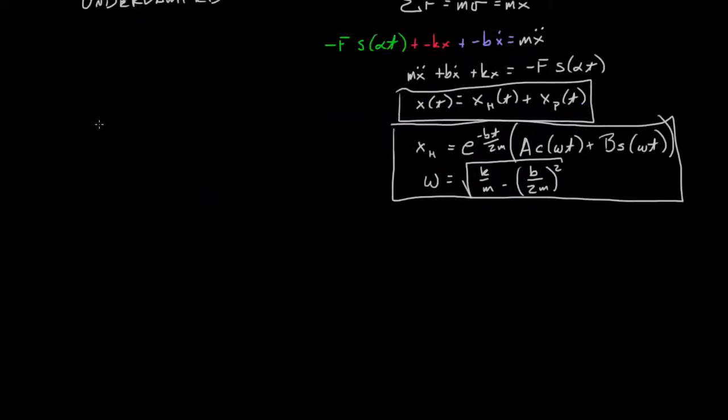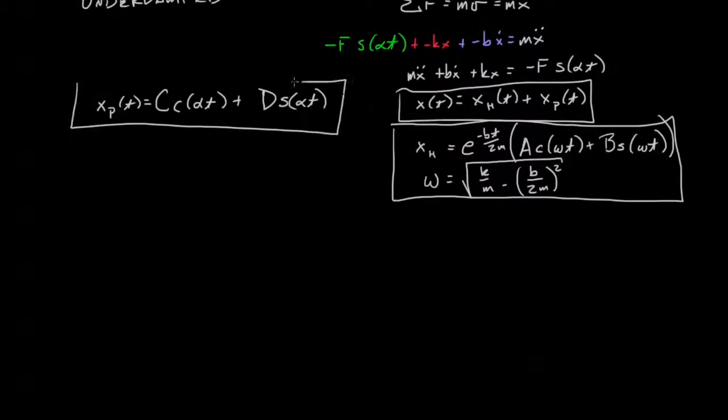Now let's write out a particular solution that corresponds with a sinusoidally varying force. Because it's sinusoidally varying, and we have to look at the first, second, and third derivatives, we know the solution is going to be of the form—we'll say x particular equals, and we used a and b over here, so we'll use c cosine, and we're going to use alpha t plus d sine alpha t, where alpha is the driving frequency.